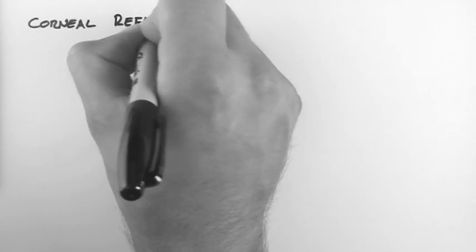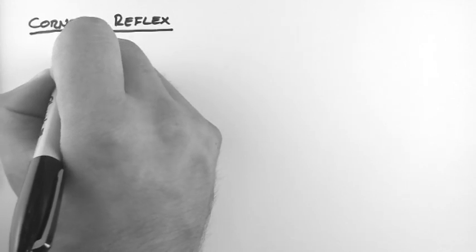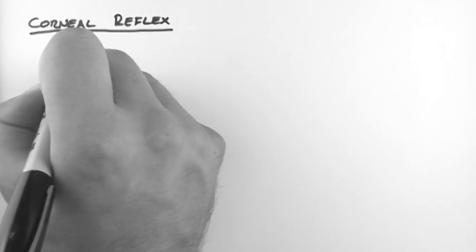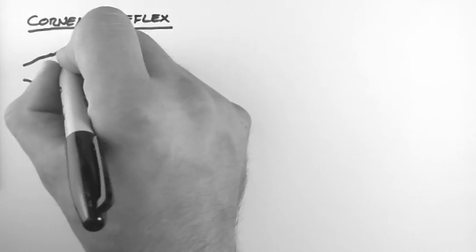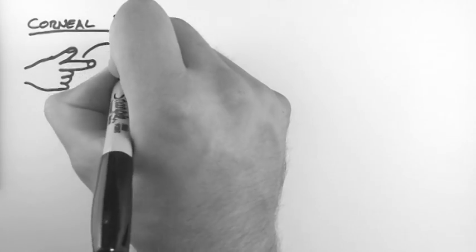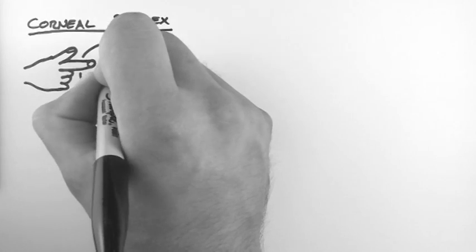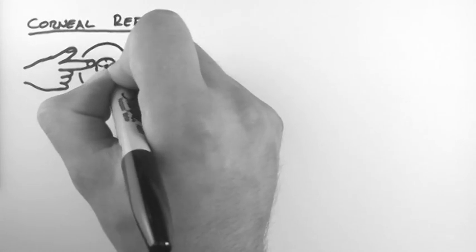Hi. In this video, I'm going to look at the corneal reflex, which is another one of the brainstem reflexes. This is a reflex that causes the eyelids to involuntarily blink when the cornea is touched. So let's have a look at how this works.